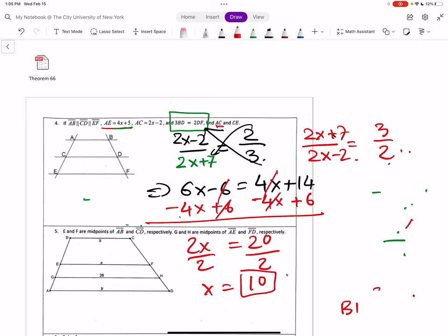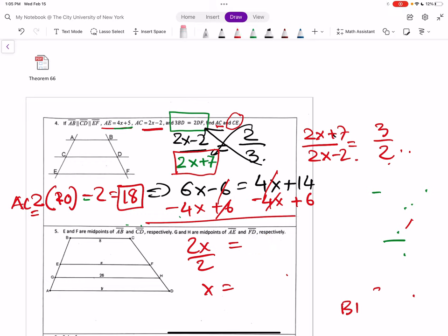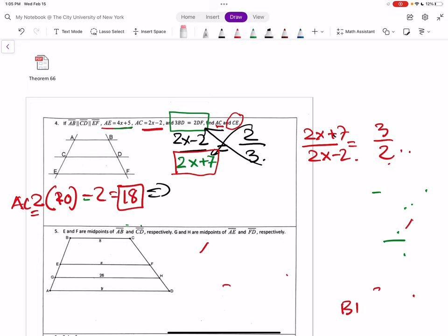So what do you need? You need AC. What was your AC? Your AC was 2x minus 2. So 2 times 10 minus 2. That is 20 and minus 2, 18. That's your AC. And now you need your CE. So our CE was 2x plus 7. For x is 10, that's 10. I'm sorry about it. It's 10, right? So you get a 27. That's it.